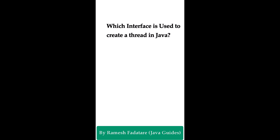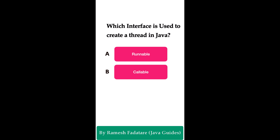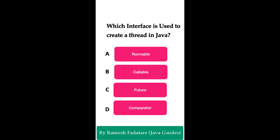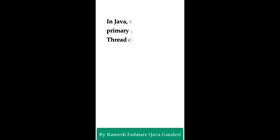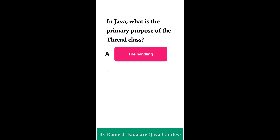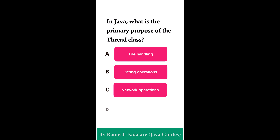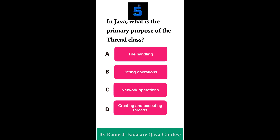Which interface is used to create a thread in Java? Option A: Runnable interface. Option B: Callable interface. Option C: Future interface. Option D: Comparator interface. The correct answer is the Runnable interface. The Runnable interface is commonly used to create threads. It is a functional interface that defines a single run() method, which contains the code to be executed by the thread. To create a thread, implement the Runnable interface, pass an instance to a Thread object, and you can also use a lambda expression to implement it.